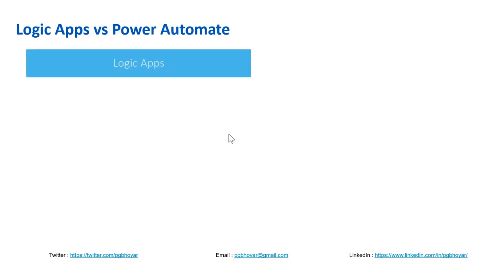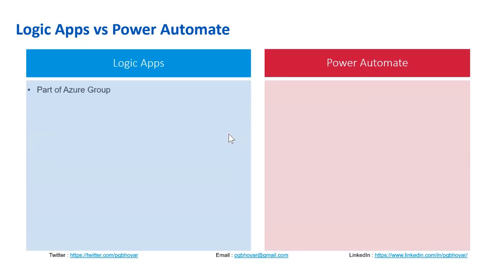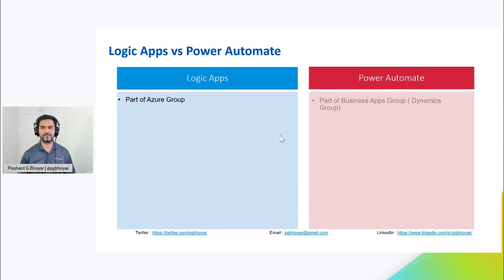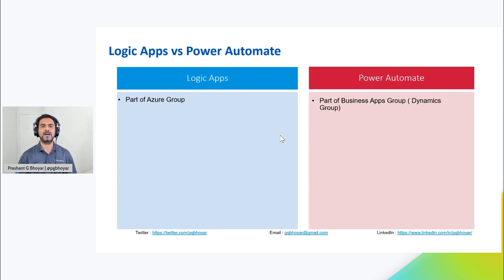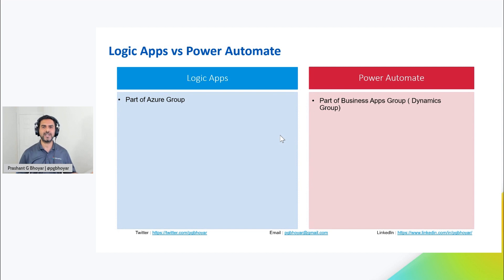Let's talk about the key differences between these two products. The first one is: Logic Apps is part of the Azure group, and Microsoft Power Automate is part of the Business Apps group or Dynamics group. Depending on which product group a product belongs to, you'll see tighter integration with other products from the same umbrella. For example, Logic Apps will have really good integration with Azure DevOps and other Azure services, whereas Power Automate will have very tight integration with Power Virtual Agents and Power Apps, which are part of the Business Apps group.